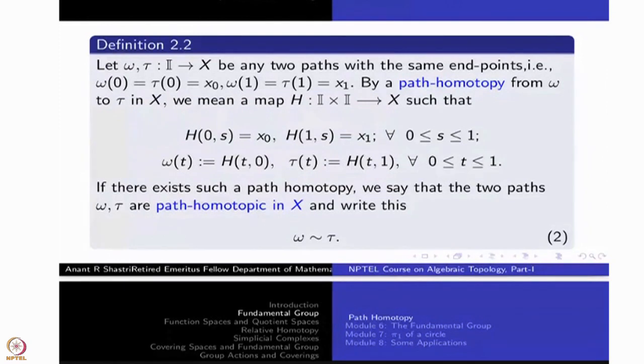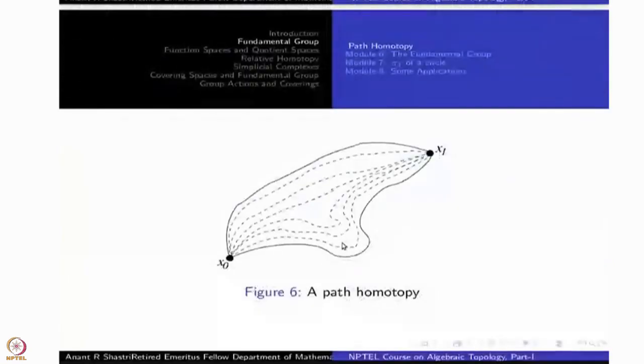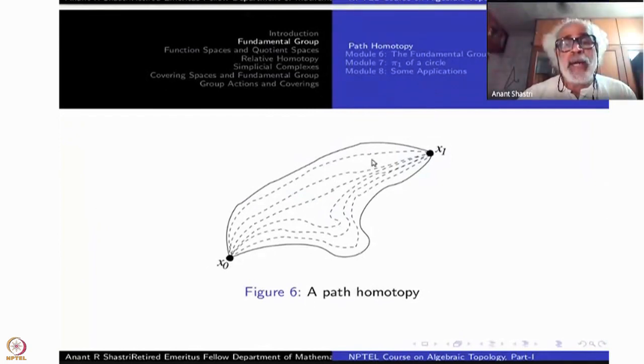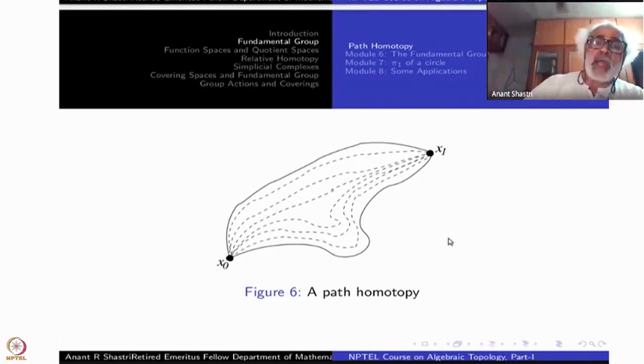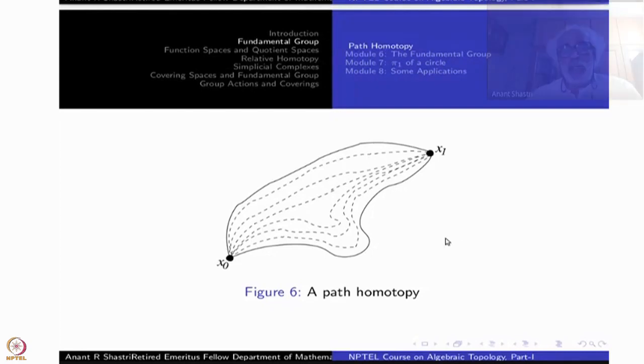General notation for homotopy was there was a twiddle and an arrow. This is a different equivalence, this is a different relation, a different symbol. So here is a picture starting with omega here ending in tau here. End points are fixed here. So this is t_1, t_2, t_3, various stages, dotted lines. So this is how a homotopy is supposed to look like.